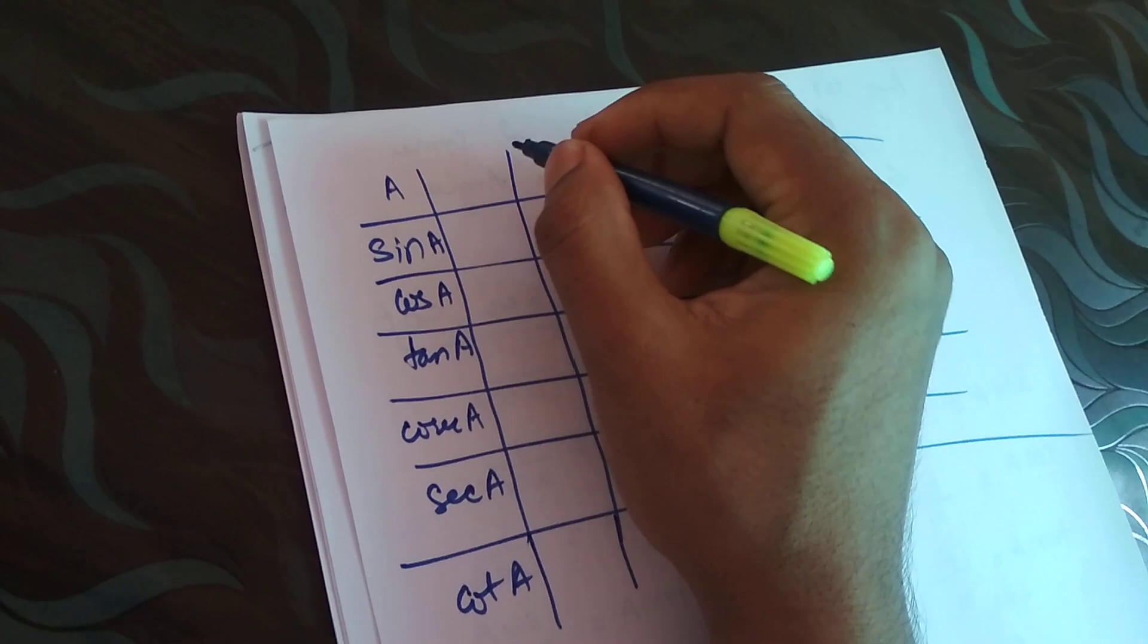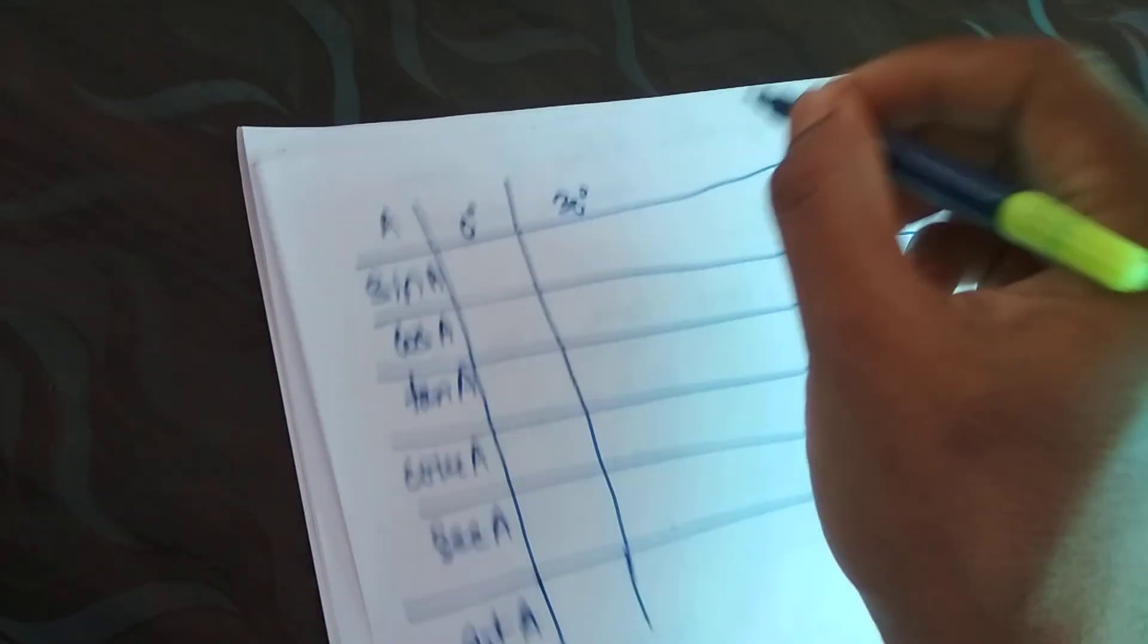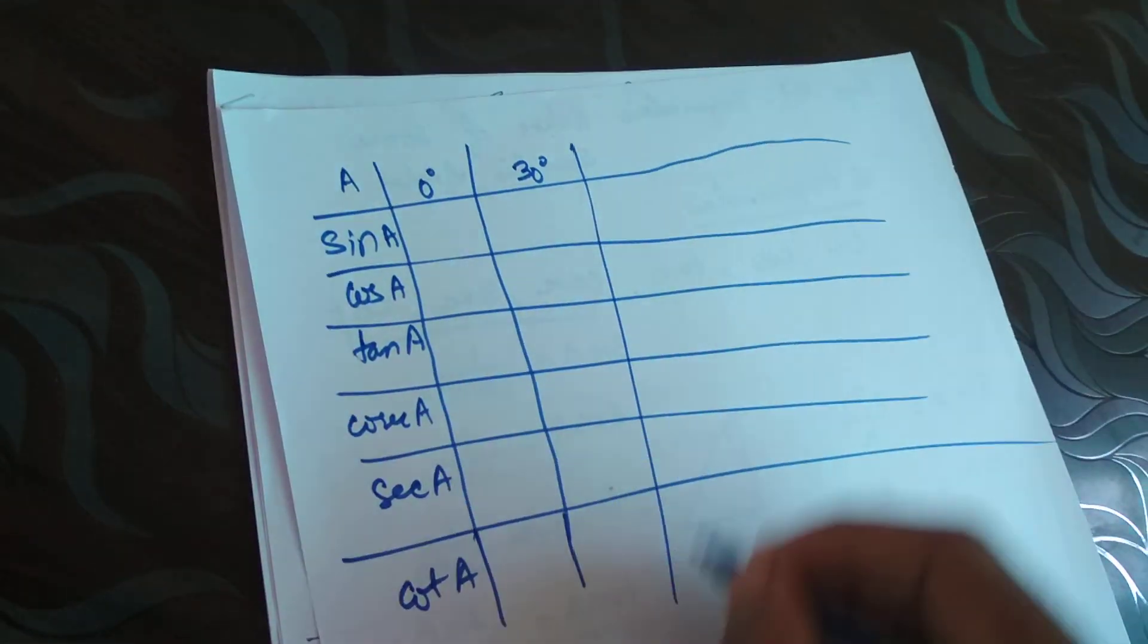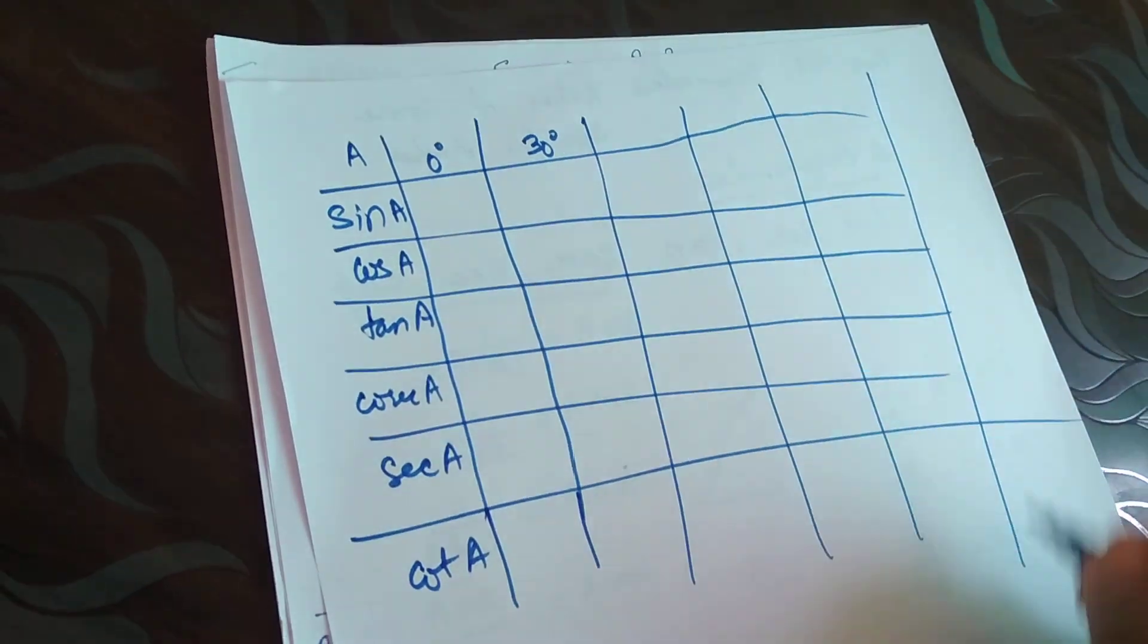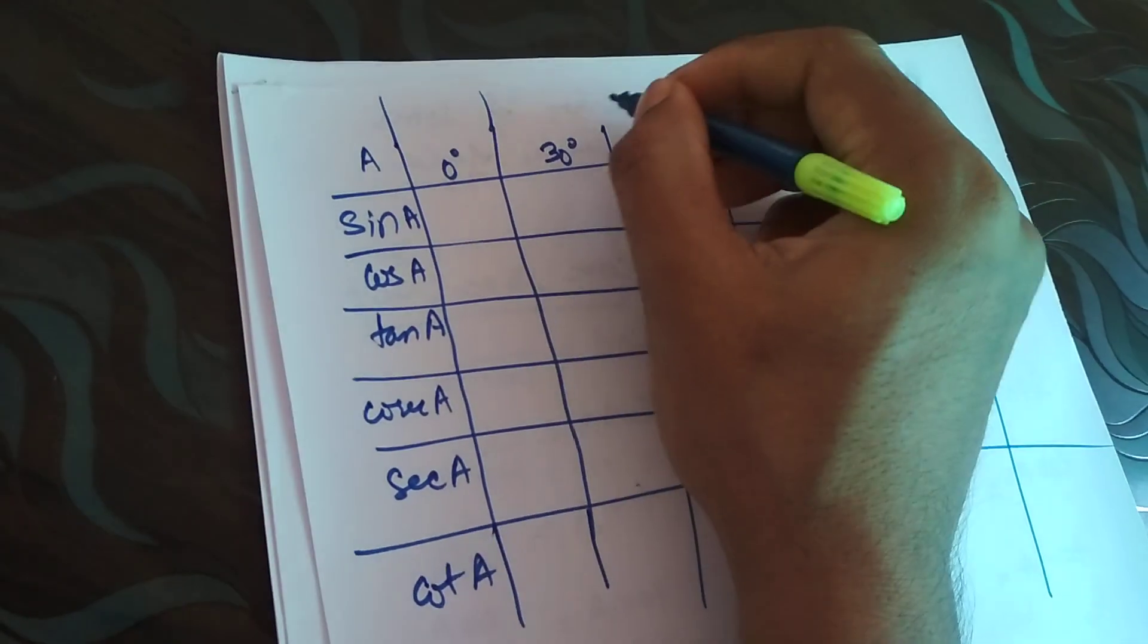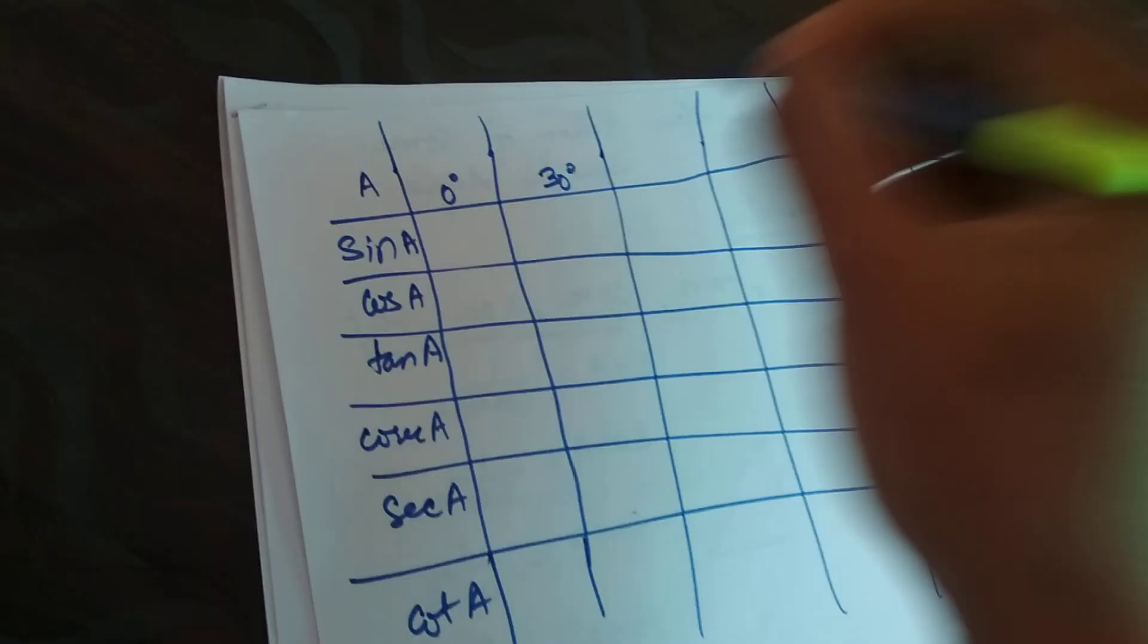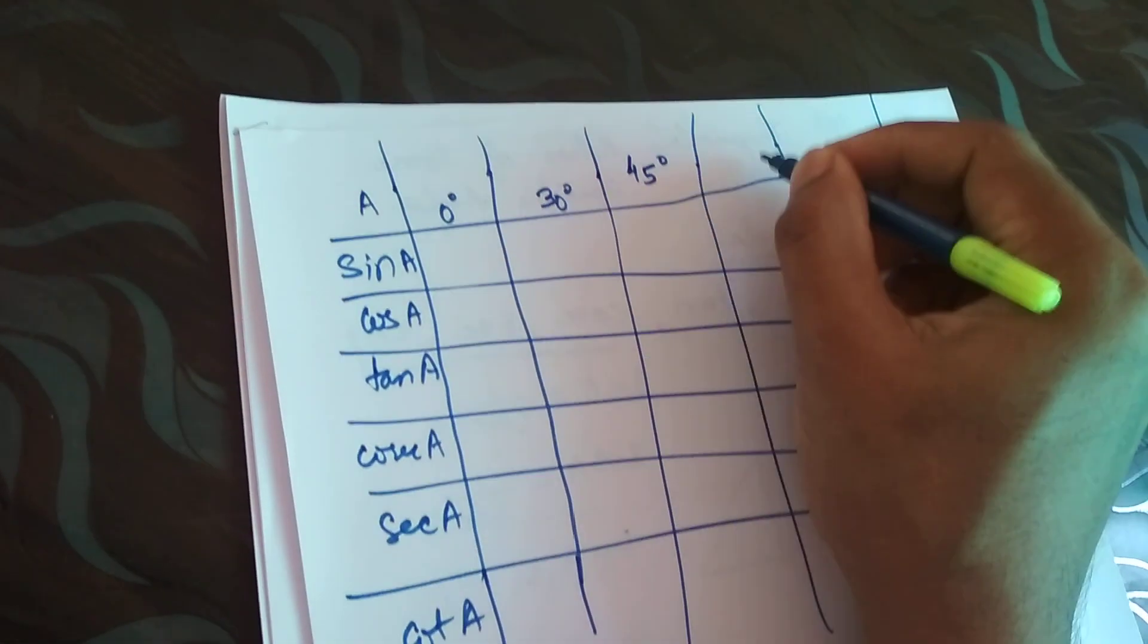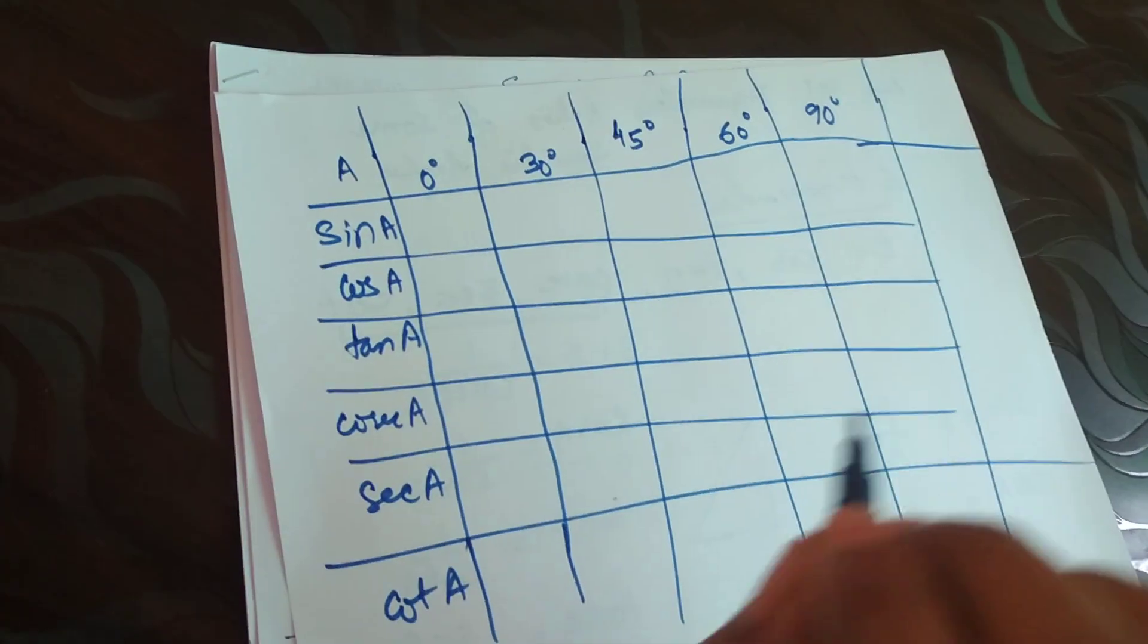A few angles that we are going to discuss: 0 degree, 30 degree, 45 degrees, 60 degree, 90 degree. These are the angle terms we are going to discuss.